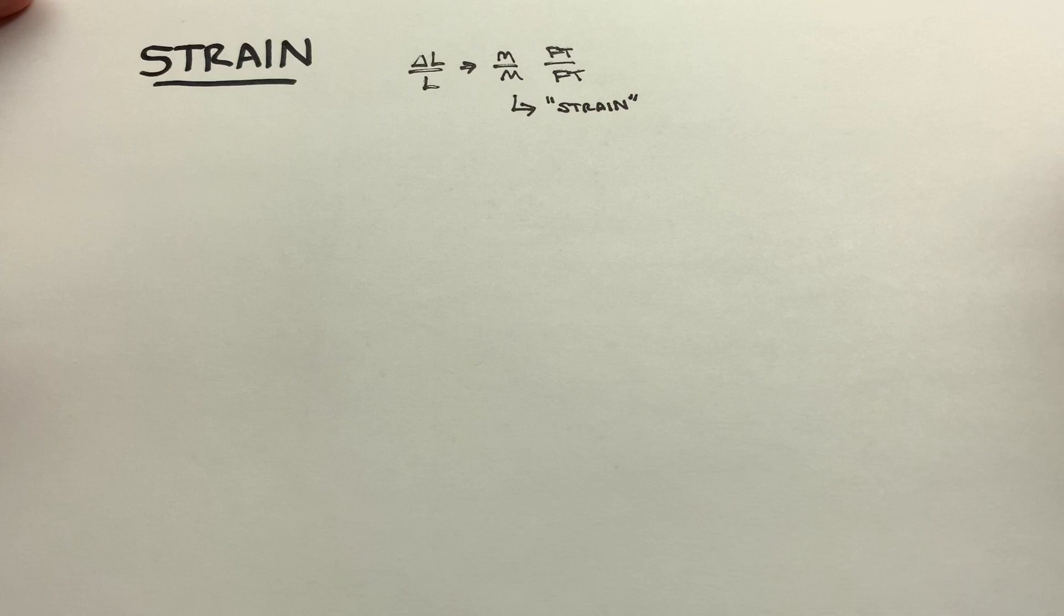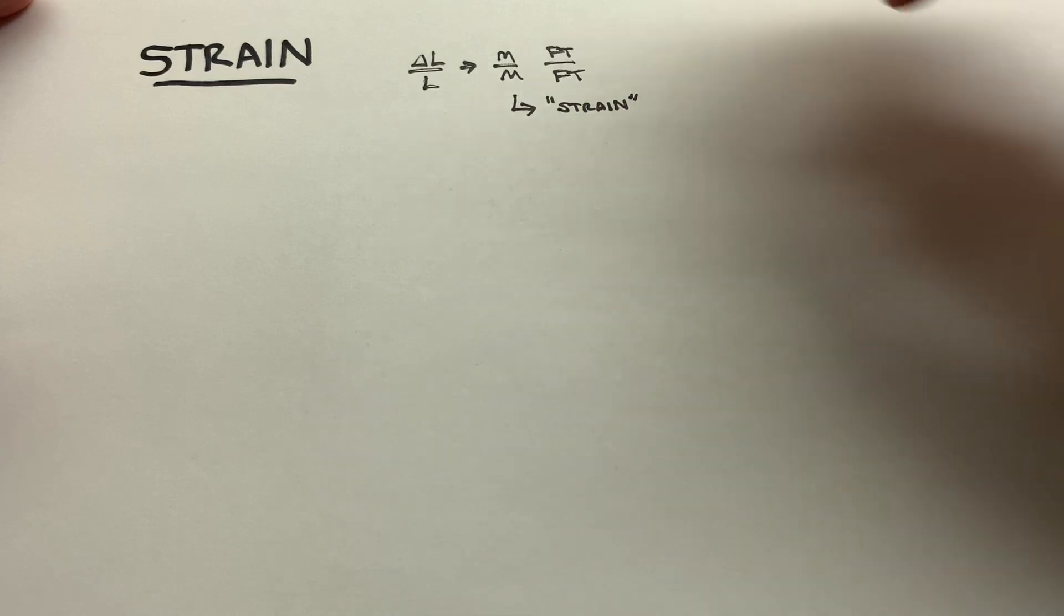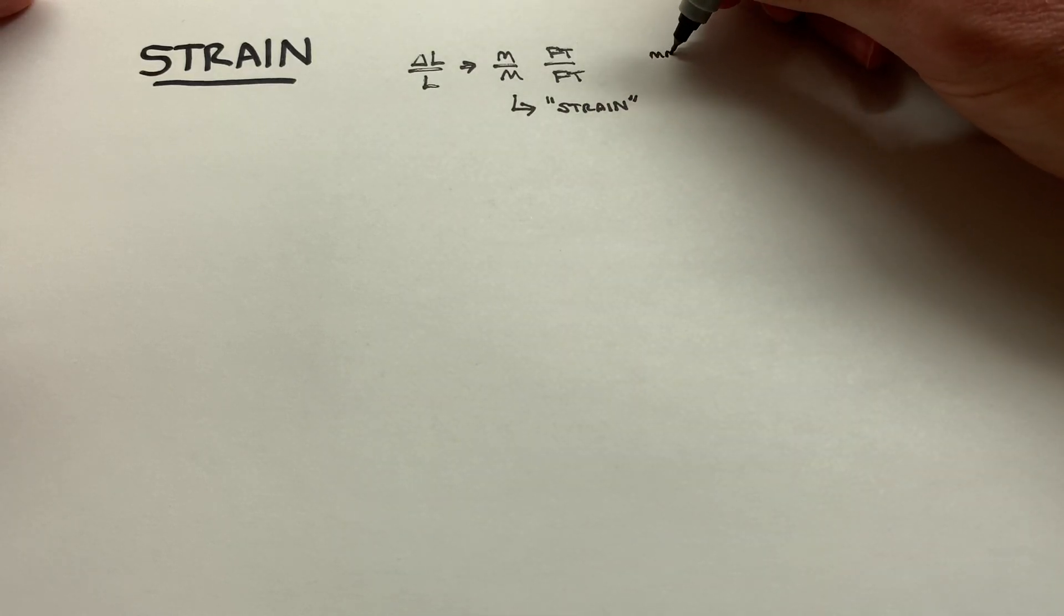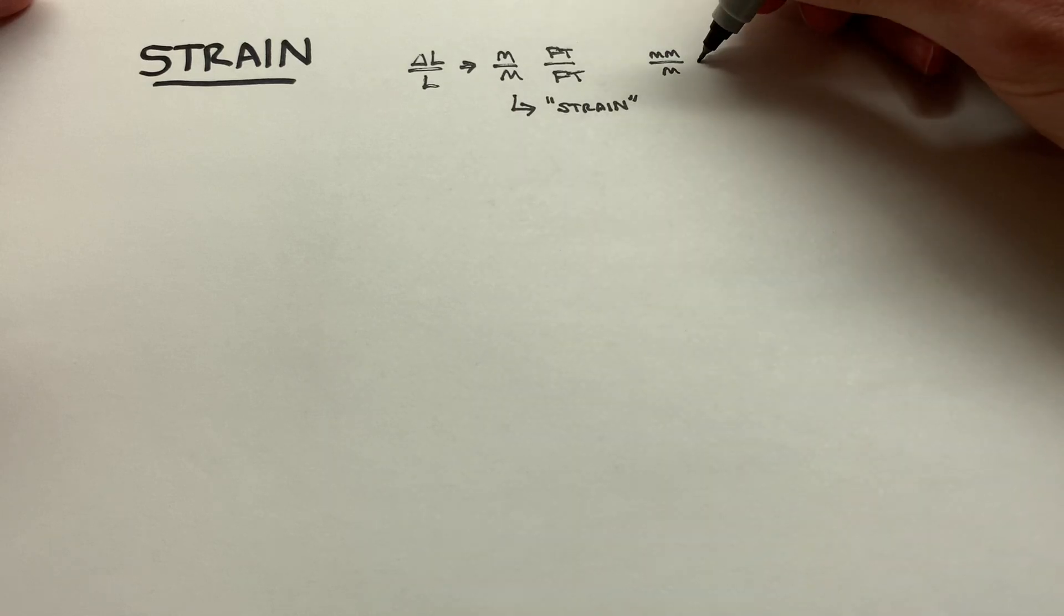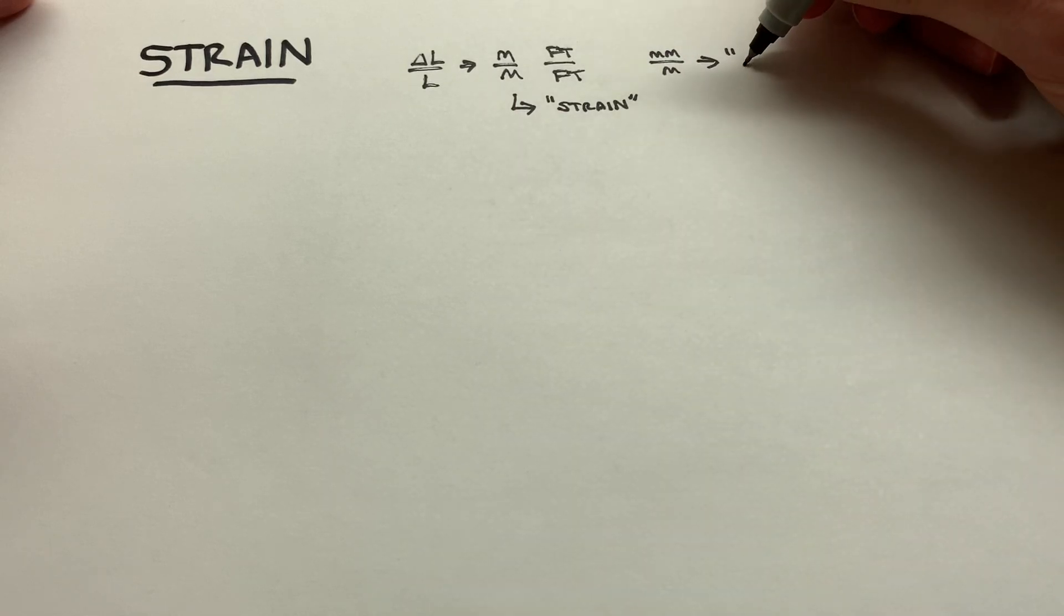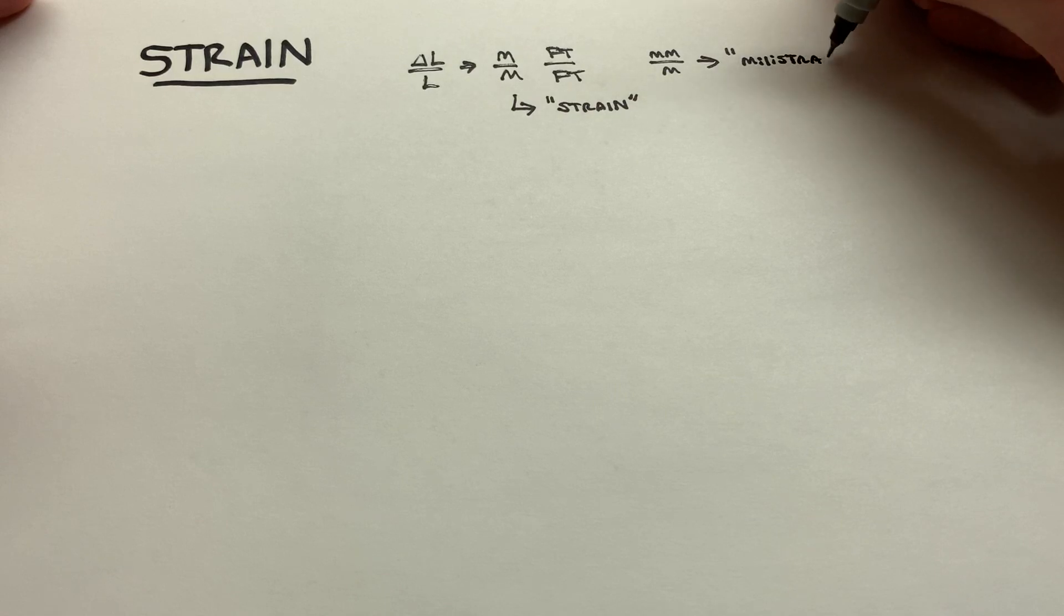Meanwhile, if it's a millimeter of deformation per meter of original length, we might call that a milli-strain. Kind of useful.